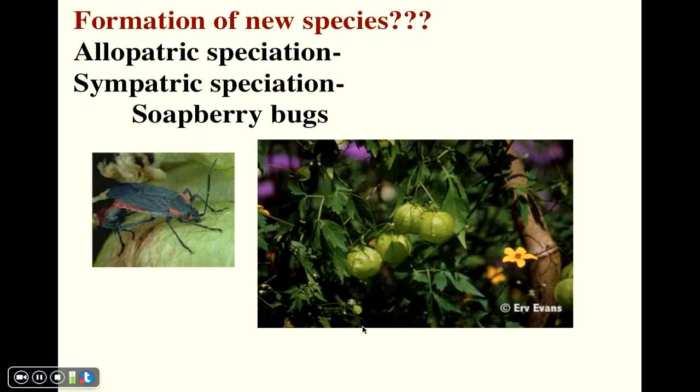So an interesting observation occurred when another species of plant, of tree, was introduced to parts of Florida. And so what we see on this image is the normal balloon vine with those large fruits that the soapberry bugs tend to eat on over toward the right. And to the left, the fruit structure of this newly introduced tree, this flat potted golden rain tree. Soapberry bugs are able to feed on those fruits as well.